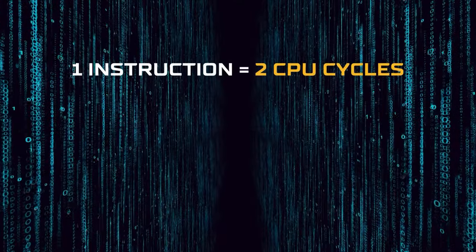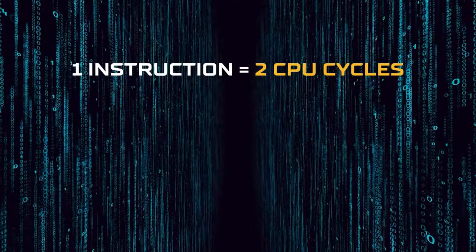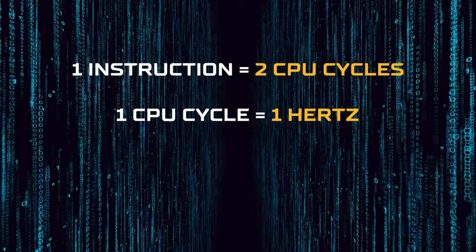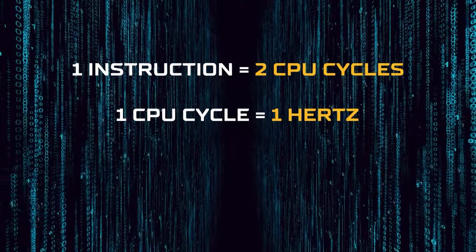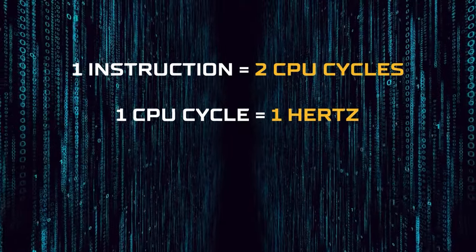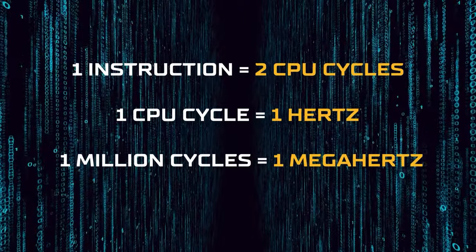The other factor behind a processor is the speed at which it executes instructions. Instructions are executed in two or more cycles. A single cycle per second is measured at one hertz. If a microprocessor has a clock speed of one megahertz, that means it performs one million cycles per second.